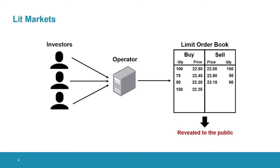In an auction with a limit order book, for example, we will know exactly who wants to buy or sell something, as well as the quantity and the price they want to trade it for. Now, suppose that at a certain point, someone submits a large buy order.